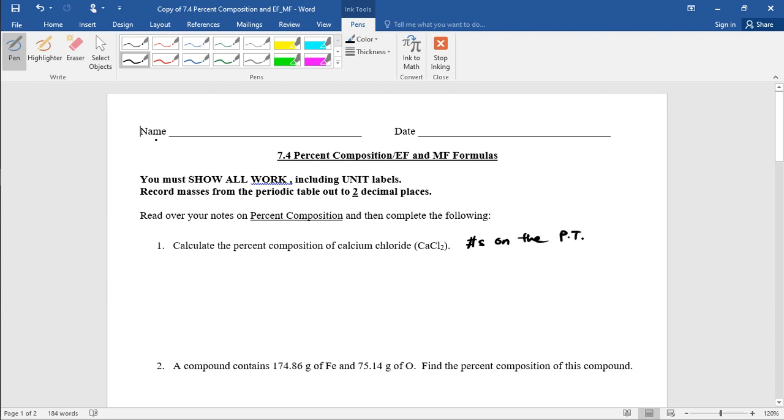So the first thing we do is calculate the molar mass of calcium chloride. The mass of calcium is 40.08 grams per mole. Each chlorine on the periodic table is 35.45, but we need two chlorines. So 35.45 times 2 is 70.90 grams per mole. The total mass of this compound is 110.98 grams per mole.